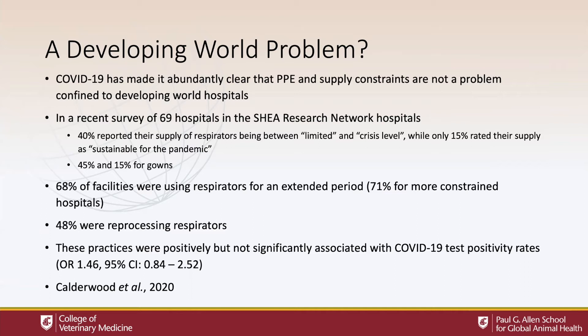71% of the more constrained hospitals were using respirators for extended periods. 48% were trying to figure out how to reprocess respirators — heat-treating or chemically treating them to put them back in circulation. This impacted not just hospitals experiencing severe outbreaks, but all hospitals as they tried to prepare. These practices were positively but not significantly associated with the test positivity rates in the areas where the hospitals were located.